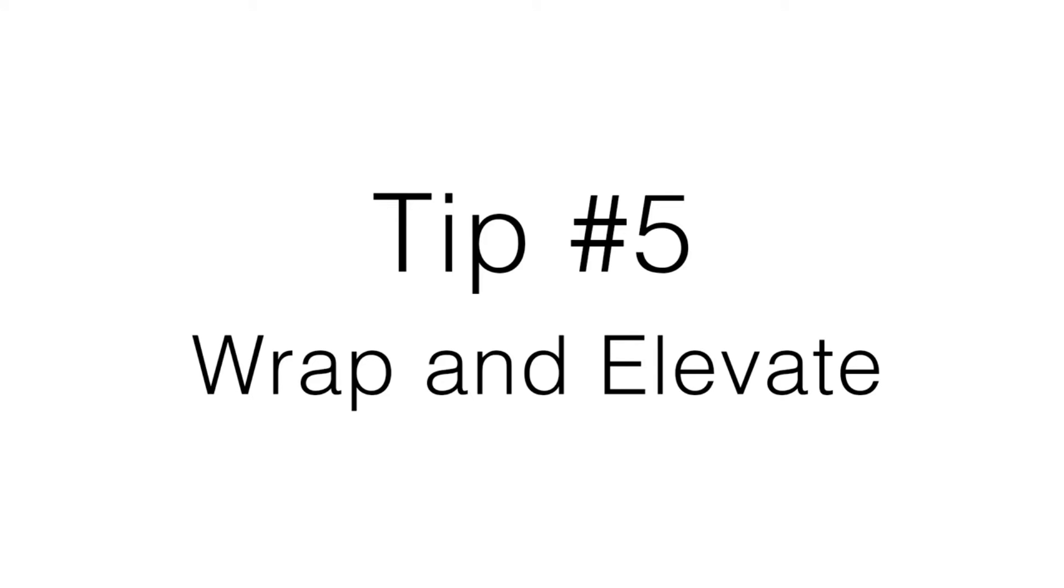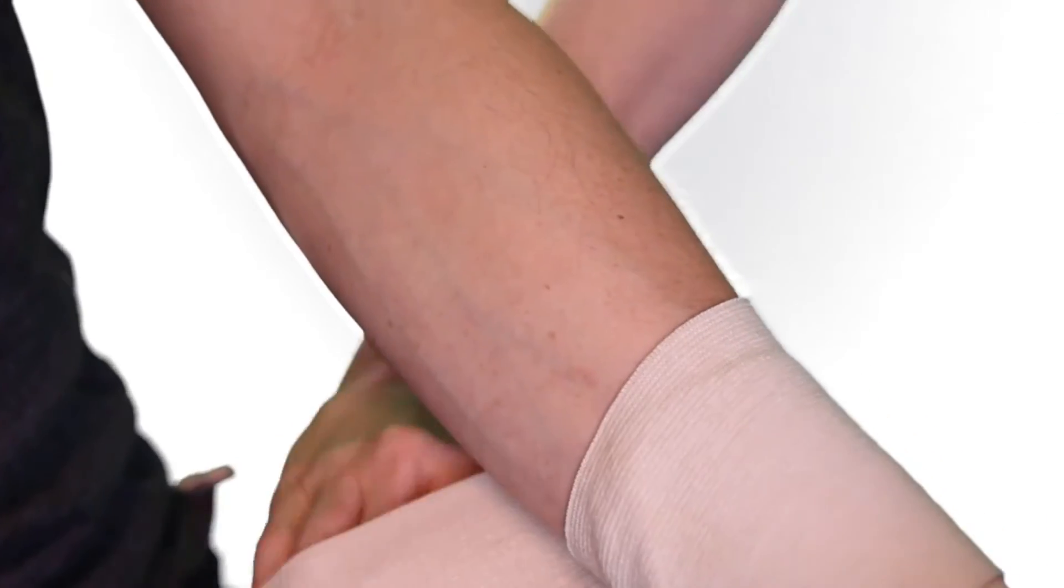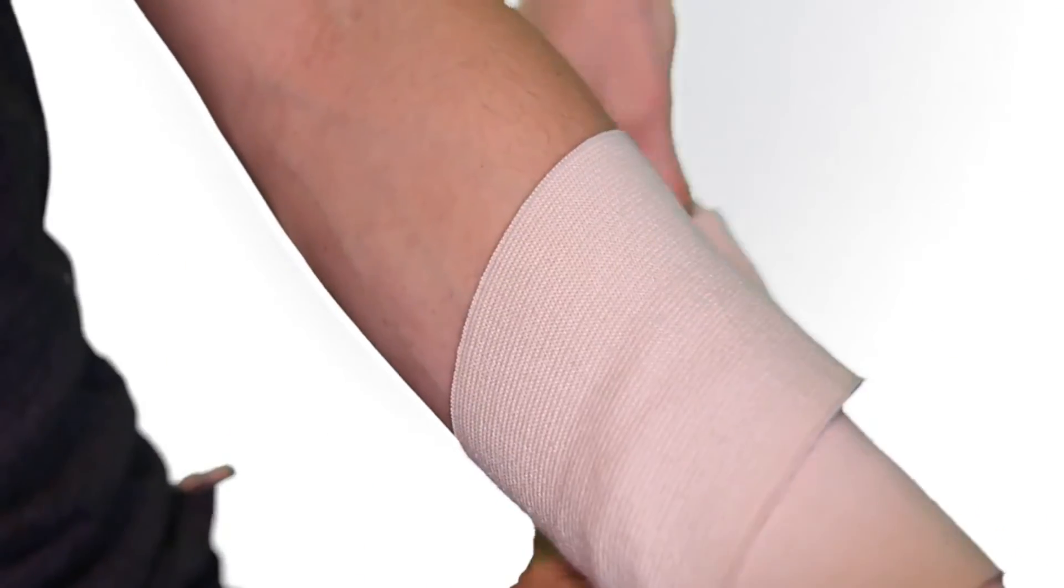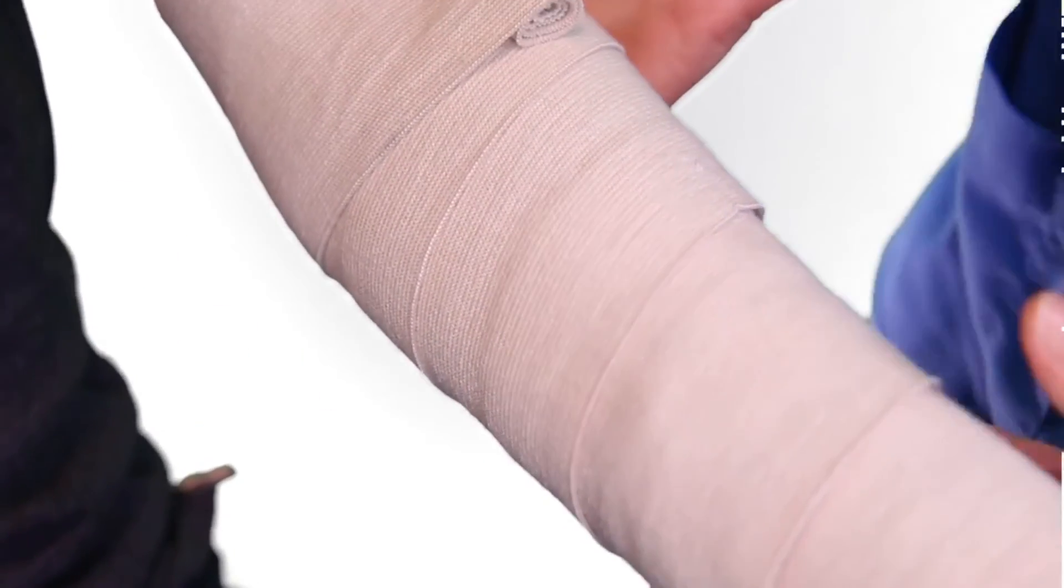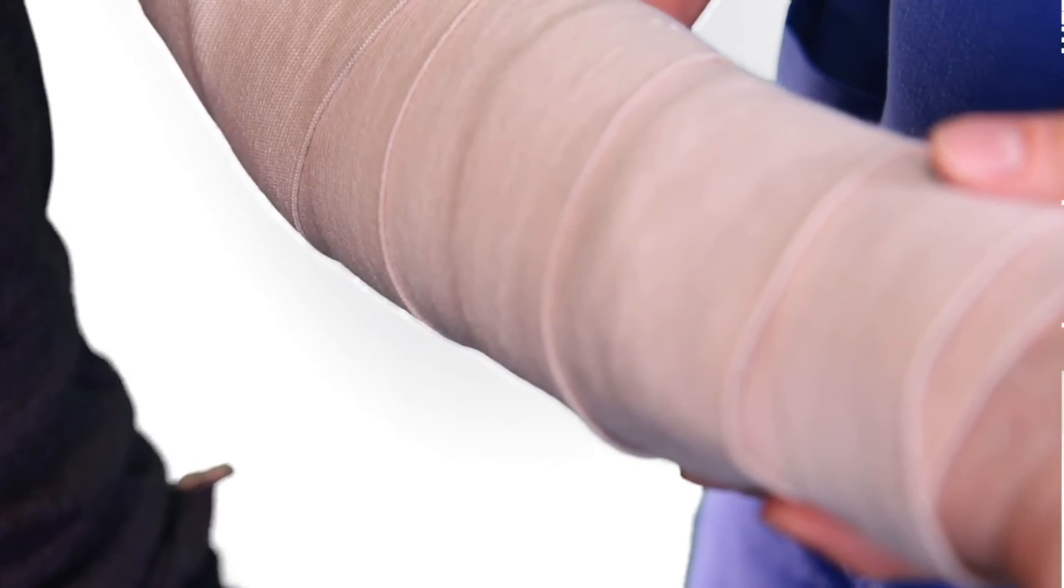Tip number five, for the patient that is obese or has generalized edema, an ACE wrap can be used to wrap their forearm then elevate the arm for about 15 minutes while the swelling temporarily decreases. When inserting the IV, leave a small portion of the cannula out so the tissue has enough room to expand when the edema returns.